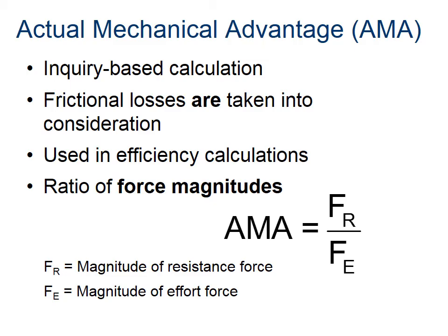The other kind of mechanical advantage is actual mechanical advantage, or AMA. This is inquiry-based, implying that we take measurements. We probably know the resistance force because we've weighed something — or we know either the effort or resistance. Actual implies real world, and we do take friction into account. Two big takeaways: actual means friction, actual means forces. The formula has the resistance force on top — remember for IMA, resistance was on the bottom — and the effort force on the bottom.